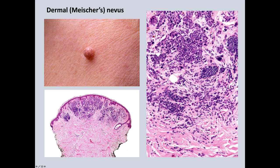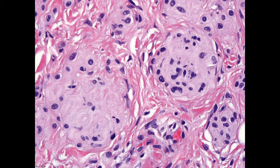Here we have a sort of end-stage nevus where it has undergone neurotization. On the left quadrant you can see a pseudo-Meissner body. Sometimes nevi may become totally neurotized, and then of course it's difficult to decide whether a lesion is a neurotized nevus or whether it represents a neurofibroma.